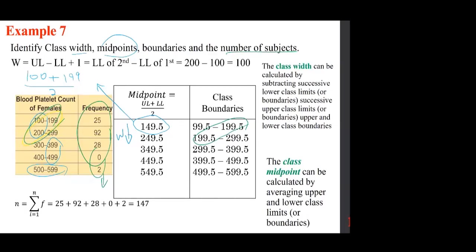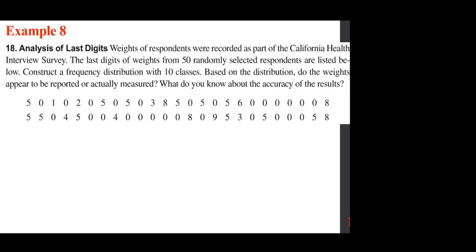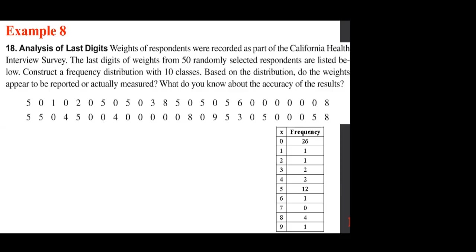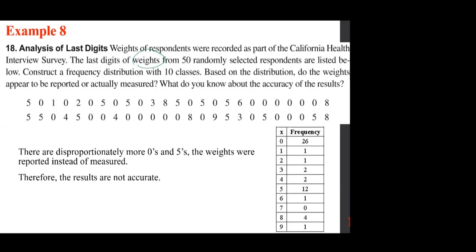Last example before moving on: Analysis of last digits. Weights of respondents were recorded as part of the California Health Interview Survey. The last digits of weights from 50 randomly selected respondents are listed. Construct a frequency distribution with 10 classes. Based on the distribution, do the weights appear to be reported or actually measured? The last digits are 0 through 9, so you can tally and make up the table.